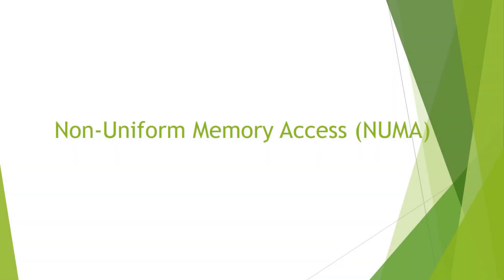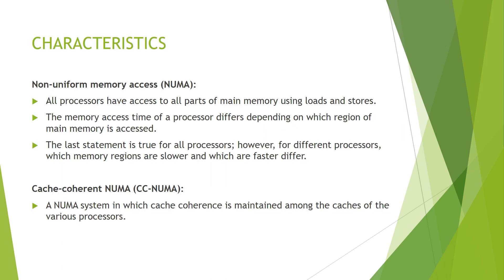We are going to continue with non-uniform memory access, also known as NUMA. The characteristics of NUMA are: all processors have access to all parts of main memory using loads and stores. Also, the memory access time of a processor differs depending on which region of main memory is accessed. The variant of NUMA is called cache coherent NUMA, or CC-NUMA, which is a NUMA system in which cache coherence is maintained among the caches of various processors.